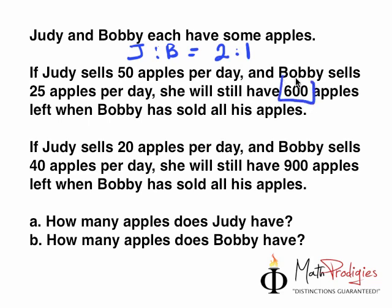She will still have 600 apples left. The second part of the question says if Judy sells 20 apples per day and Bobby sells 40 apples per day, that's 20 to 40, 2 to 4, which actually equals to 1 is to 2. So instead of 2 to 1, the current ratio is 1 to 2. It's pretty similar to what we did before.